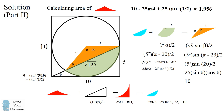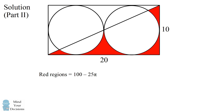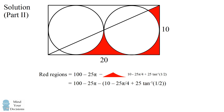So now we're going to put this all together and calculate the area of the red regions. As illustrated, the red regions from part one are 100 minus 25 pi. In our second problem, we remove the piece in the lower left-hand corner which we just solved for. Substituting that in and simplifying, the area of these red regions is 90 minus 18.75 pi minus 25 times the inverse tangent of 1/2, which is approximately 19.504.